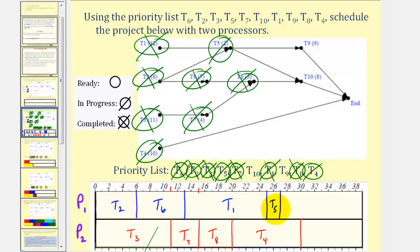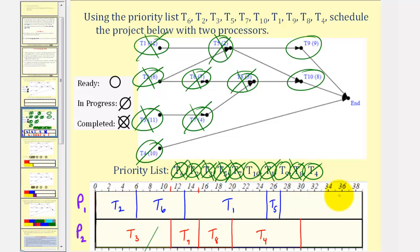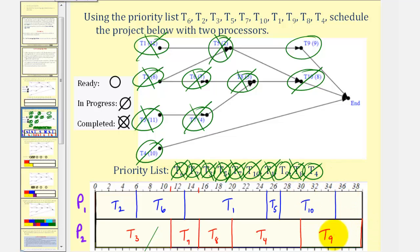At twenty-seven hours, task five is complete. Notice how this makes task nine and ten both ready. Task ten is assigned to processor one — task ten takes eight hours, so twenty-seven plus eight would be thirty-five. Task ten is in progress. At thirty hours, task four is complete, leaving task nine to be assigned to processor two. Task nine takes nine hours, so thirty plus nine takes us to thirty-nine hours. Task nine is now in progress.